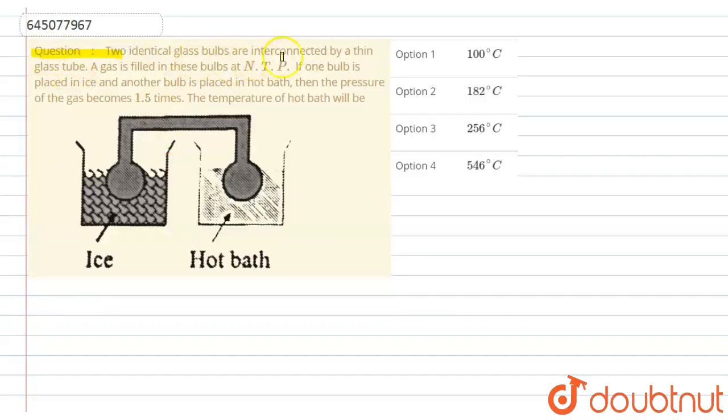Two identical glass bulbs are interconnected by a thin glass tube. A gas is filled in these bulbs at NTP. If one bulb is placed in ice and another bulb is placed in hot bath, then the pressure of the gas becomes 1.5 times. Then we have to find here the temperature of hot bath. Okay, so let's look at this solution.